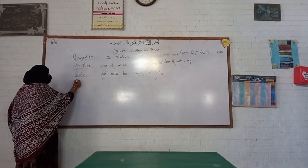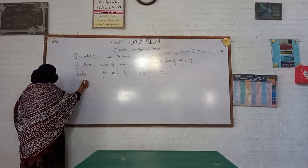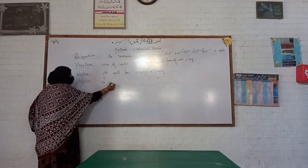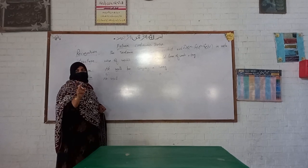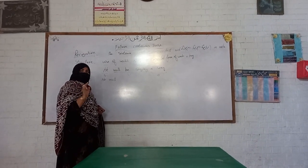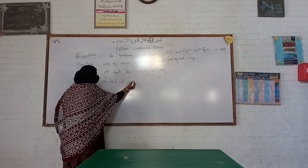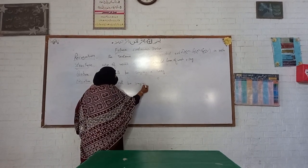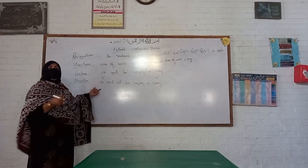Now let's make a negative sentence. It is very easy — we just add 'not' after 'will' or 'shall'. So: 'He will not be singing a song.' The rest of the sentence remains as it is. This is the negative sentence.